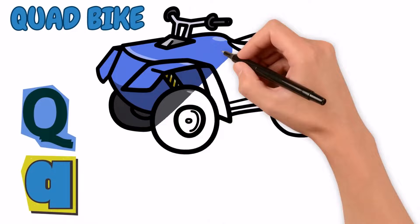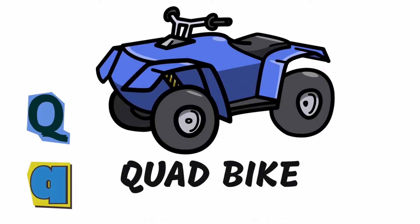Q. We drive this bike that has four wheels on the beach or in deserts. It is a quad bike.